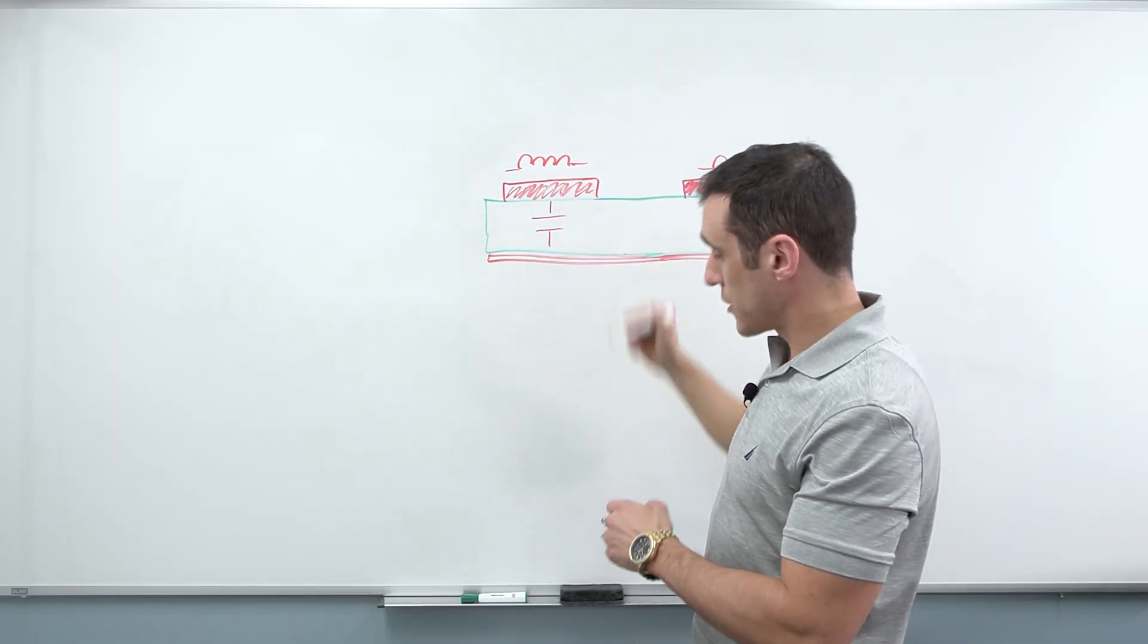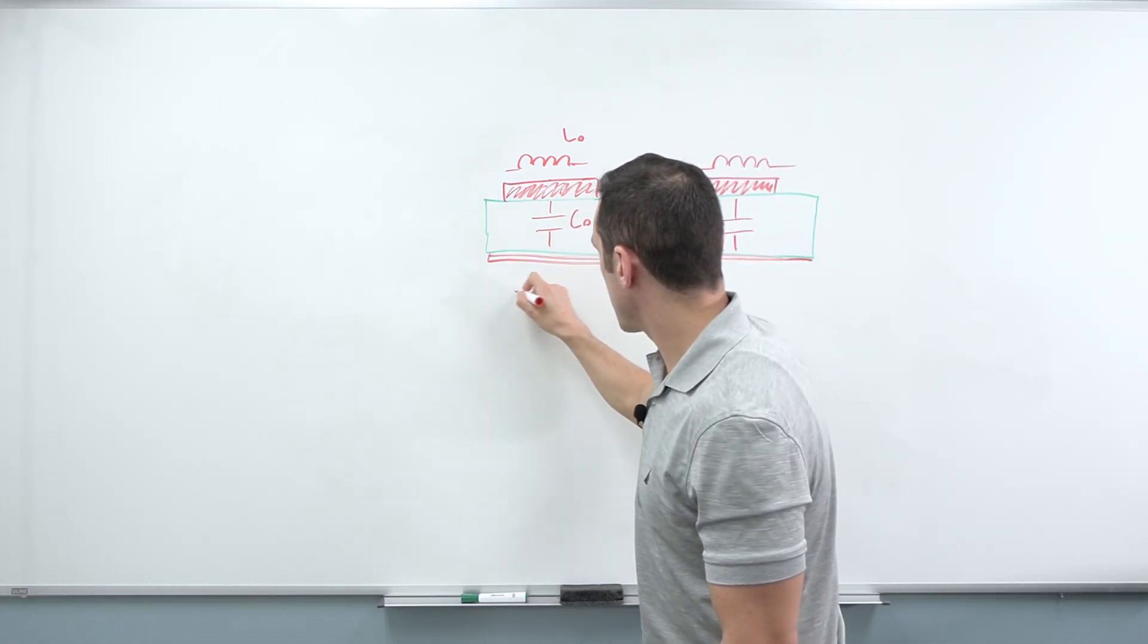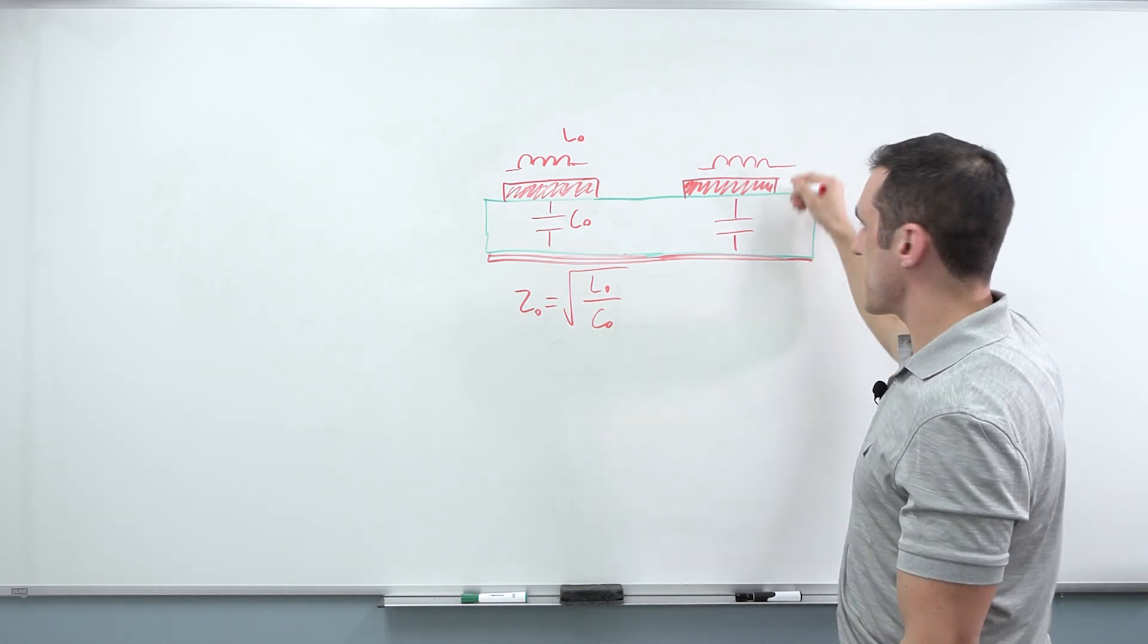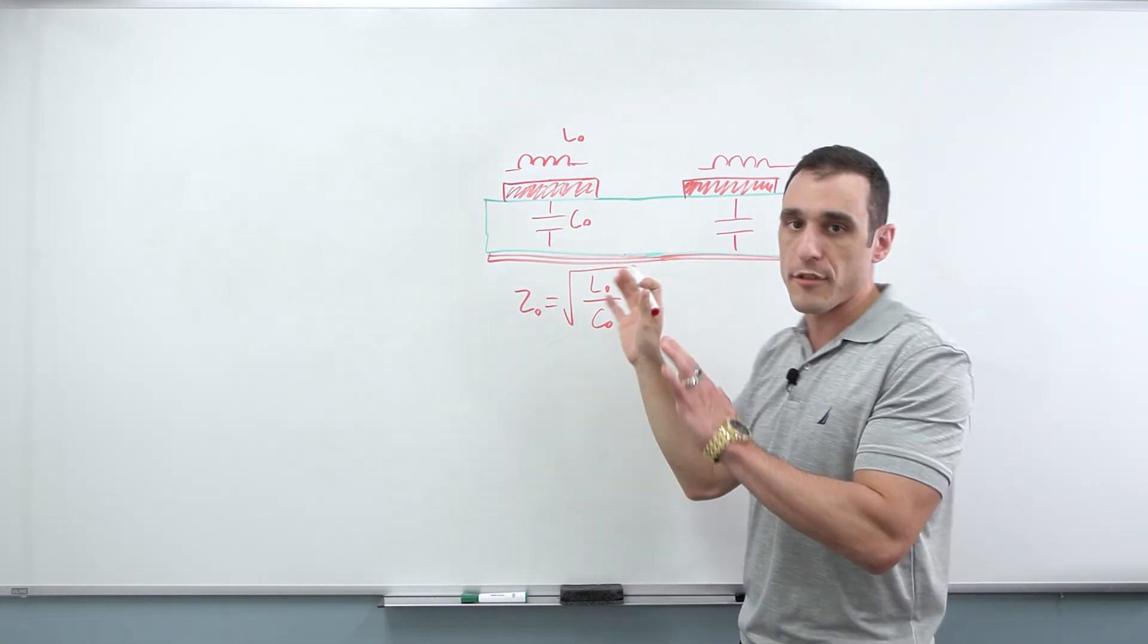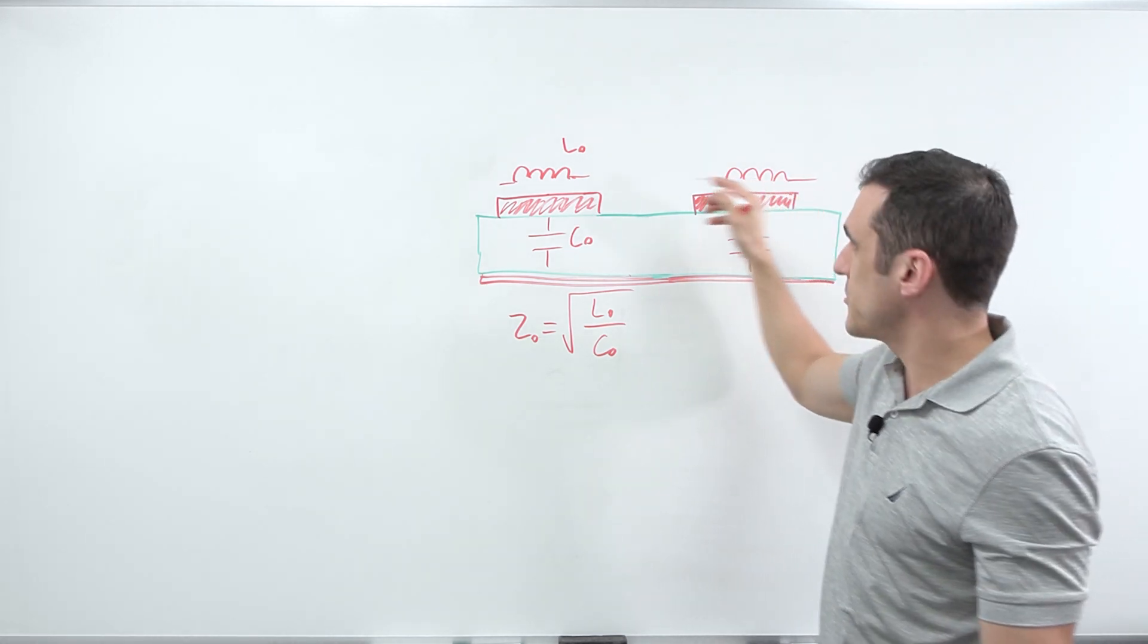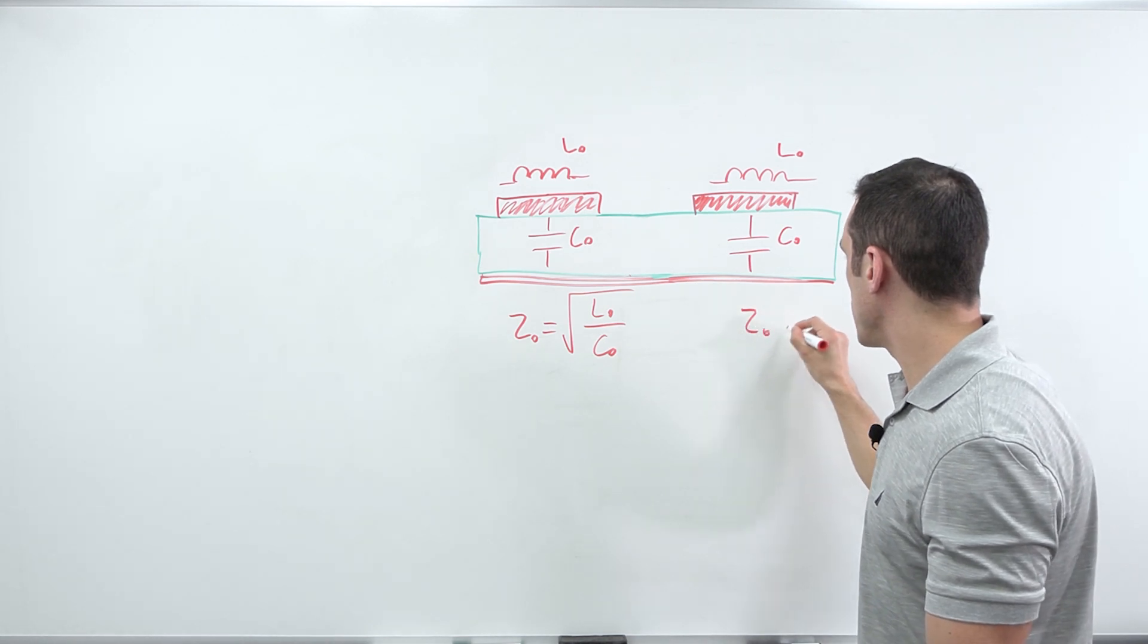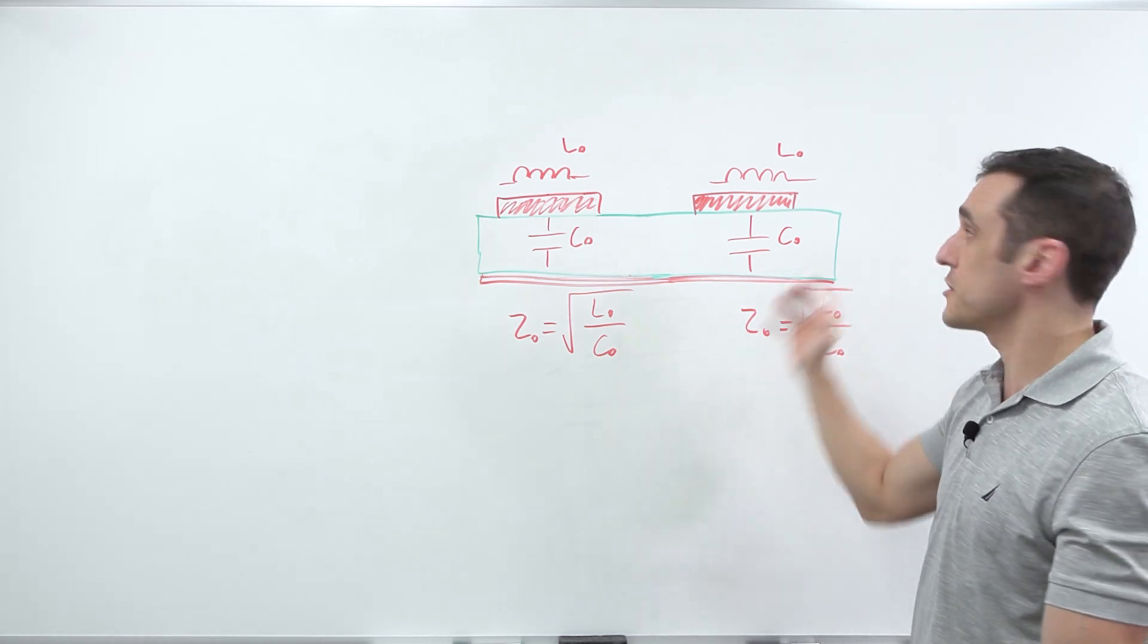That means that this trace, when considered on its own, it has an L zero and a C zero, and its impedance, single ended impedance, is just square root of L sub zero over C sub zero. Same thing over here. So let's just assume that we have the same height here, which would be the case if these are on the same layer, same ground plane, same everything. And we have the same width and the same copper weight, which again, the copper weight, you would expect them to be the same, assuming that they're on the same layer. So this would also have an L sub zero, this would also have a C sub zero, and this thing individually would also have a single ended impedance of L sub zero over C sub zero. So these are the same.